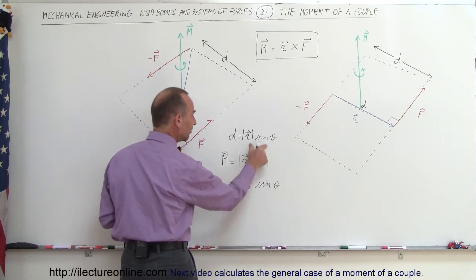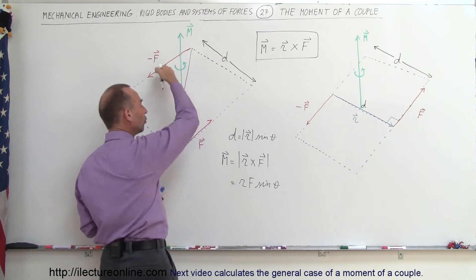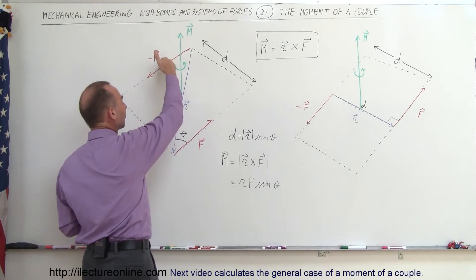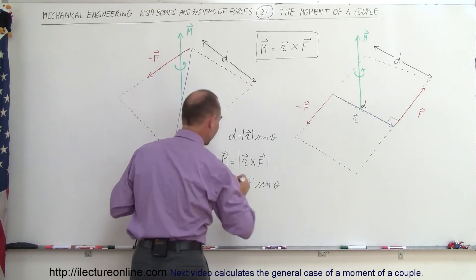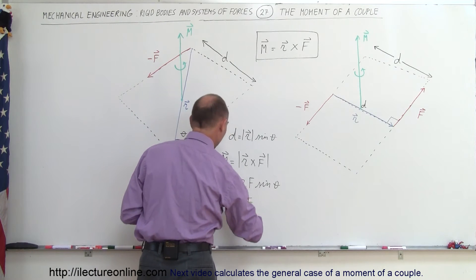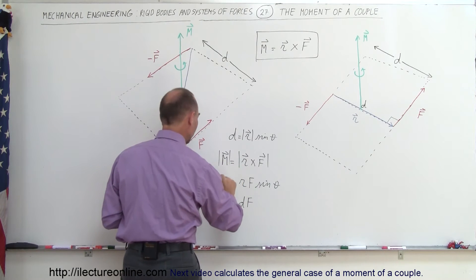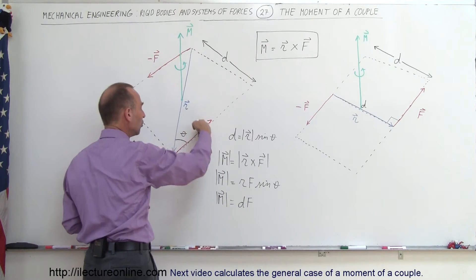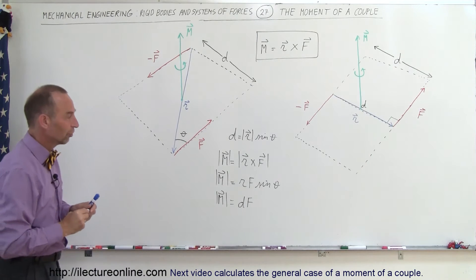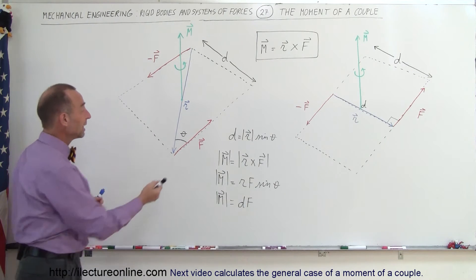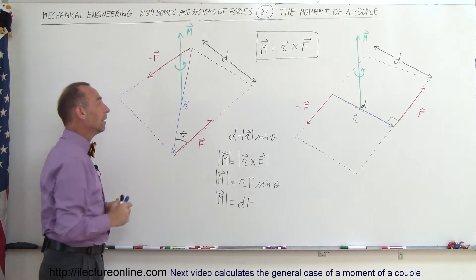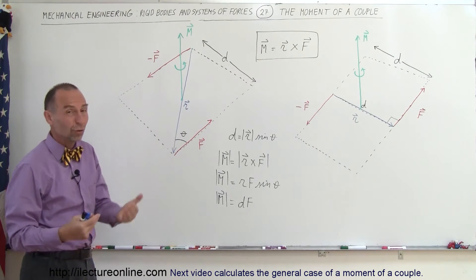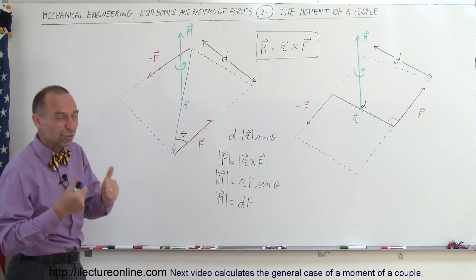Notice that r times the sine of theta equals the distance between the two forces — the distance along the line perpendicular to the two forces. Therefore, the magnitude of the moment is simply equal to d times F: the distance between the two forces times the magnitude of one of the forces. Since we're talking about magnitude, it doesn't matter which force we use. The negative sign simply represents direction — it indicates the opposite direction — and the magnitudes of both forces are the same.